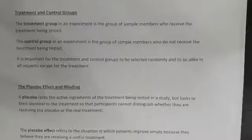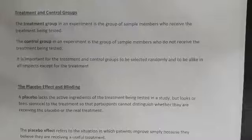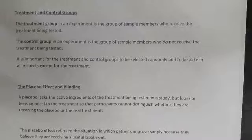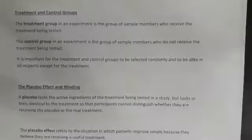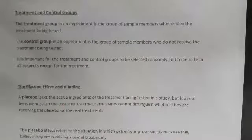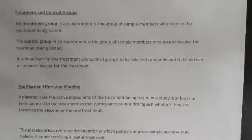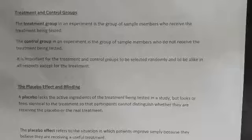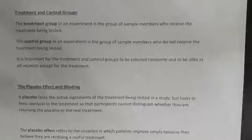In an experiment there is a treatment group and a control group. The treatment group receives the treatment; the control group does not. It's really important to do this because of the placebo effect. The treatment and control groups should be selected randomly and be alike in all respects except for the treatment.